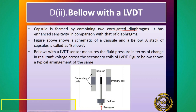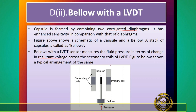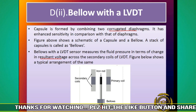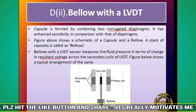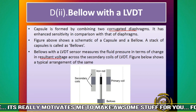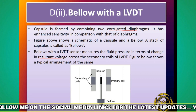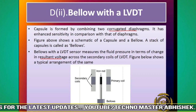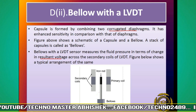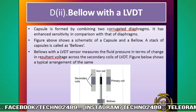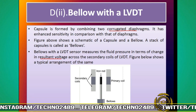अब देखेंगे bellows with LVDT - linear variable differential transformer। Bellows को LVDT के साथ use करके fluid pressure measure करते हैं in terms of change in resultant voltage। LVDT में primary coil और secondary coil होती है - secondary coil का resulting voltage measure करते हैं। यहाँ iron rod है, secondary coils हैं, और primary coil अंदर है। जैसे pressure पड़ेगा, iron rod move करेगा, displacement होगा, secondary coil में EMF induced होगा, और उस voltage के आधार पे pressure measure कर सकते हैं।